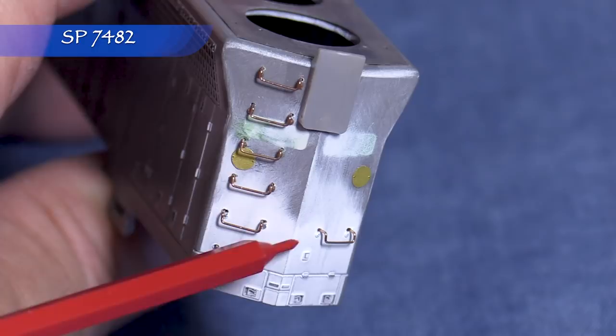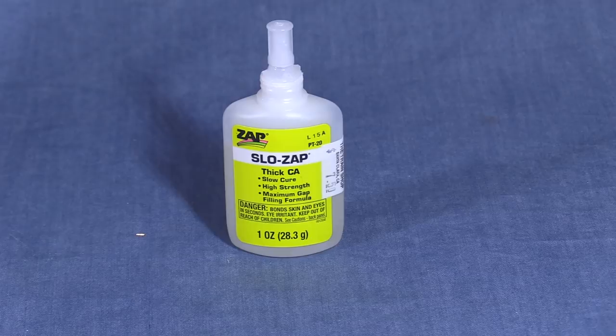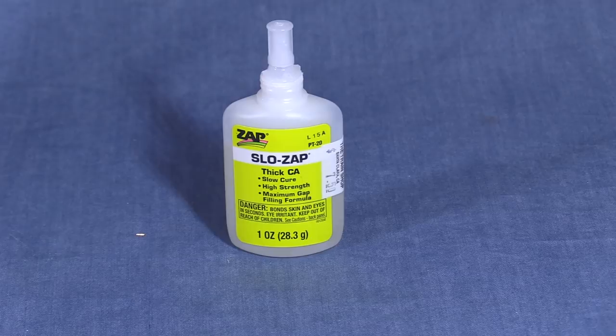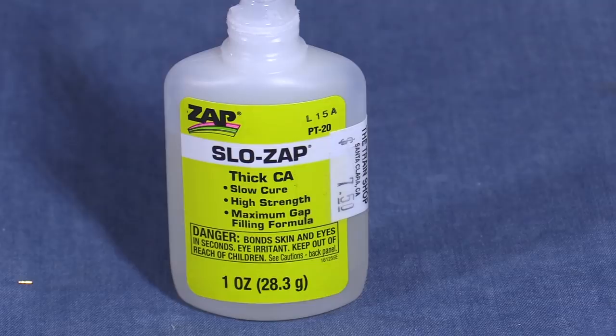I'm using the same Titchy grab irons on the SD45Rs applied using the same techniques as on the B30-7. The only difference is that I use thick CA to glue these from the inside. It has more viscosity and doesn't run all over the place the way the thinner glue can, so it's a little easier to control where it ends up. In hindsight, it would have been better to use this on the B30-7.